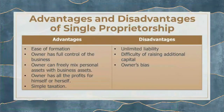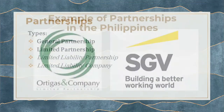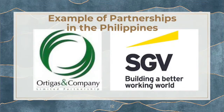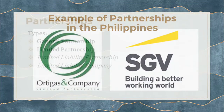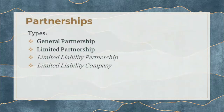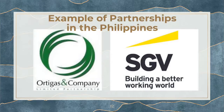Here are the advantages and disadvantages of single proprietorship. For partnerships, there are four types. The book provides examples of partnerships in the Philippines. One example is Ortigas and Company, which is considered an exception to the rule — because usually you establish a partnership for a profession.